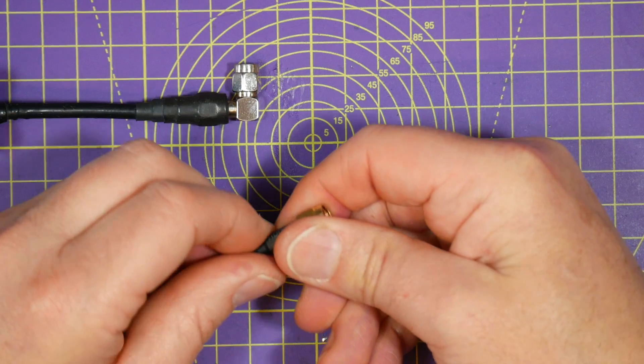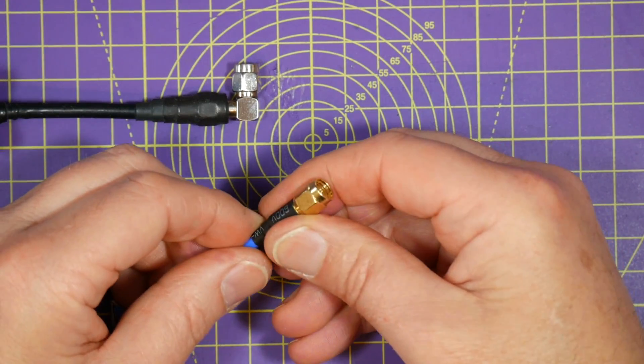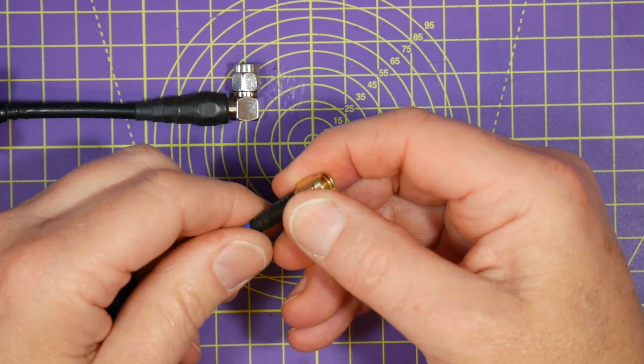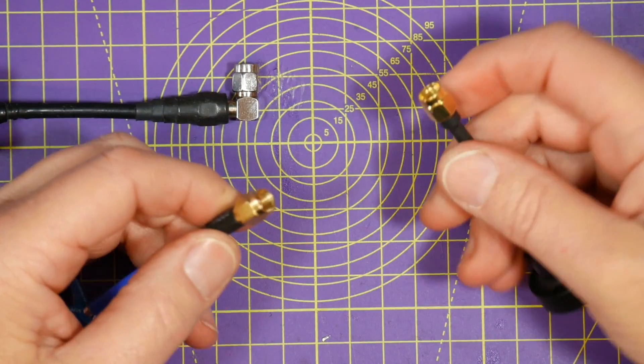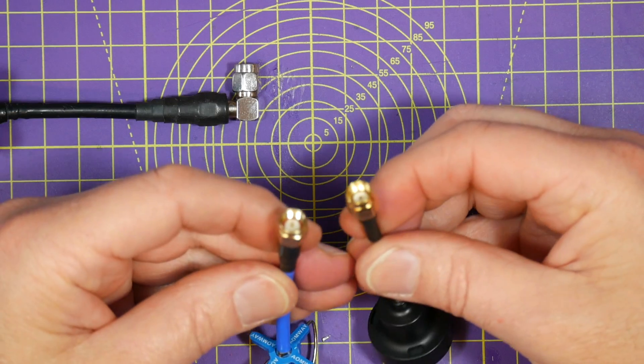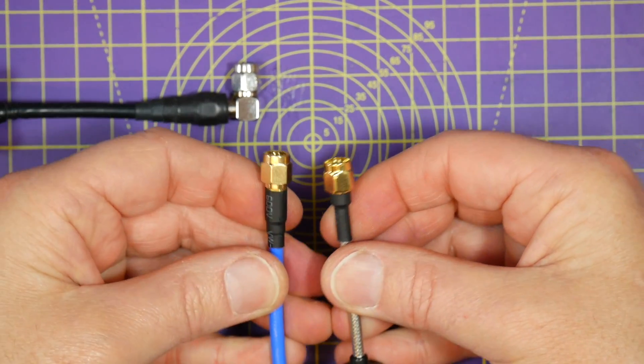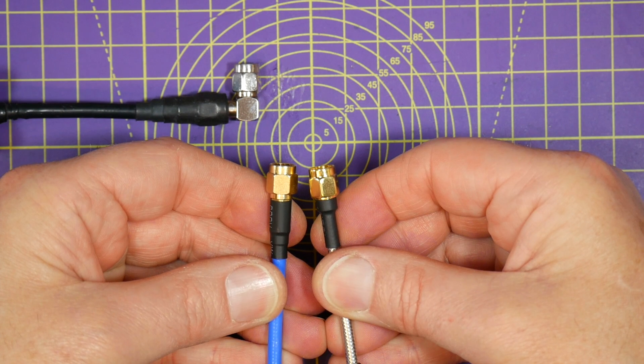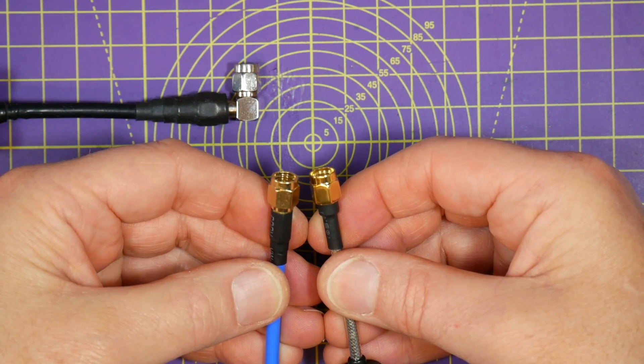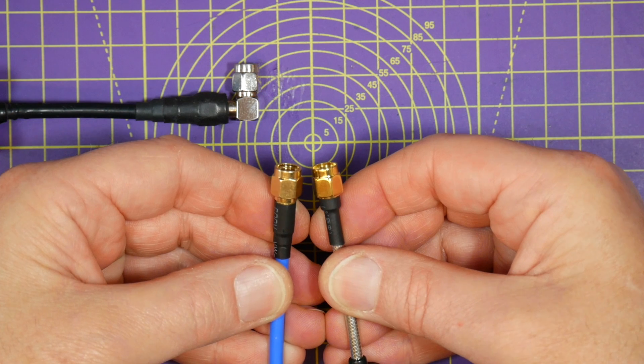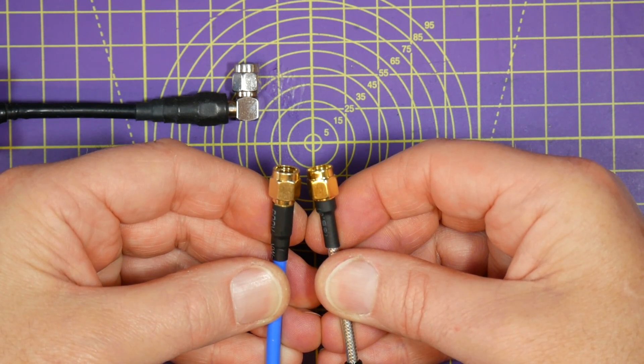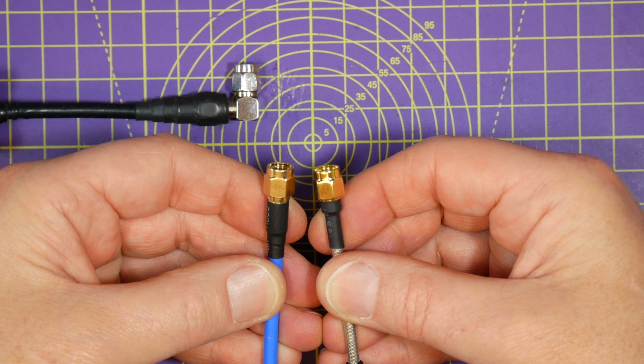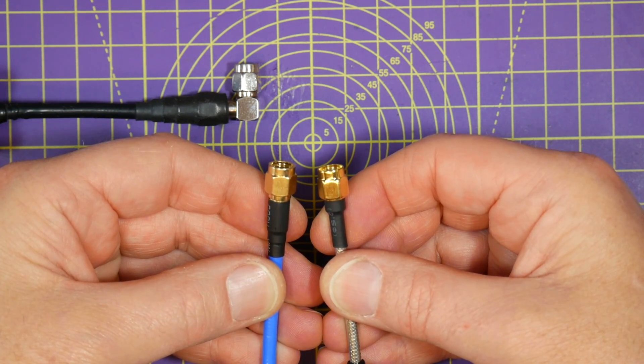Now, confusingly, SMA connectors come in two distinct flavors. There's SMA, like this, and reverse polarity SMA, or RP-SMA, which is like this. And they look, to all intents and purposes, completely the same, especially when you're looking around on websites. But they're not compatible with each other, although there's no performance difference. And you won't be the first person to accidentally buy the wrong one.